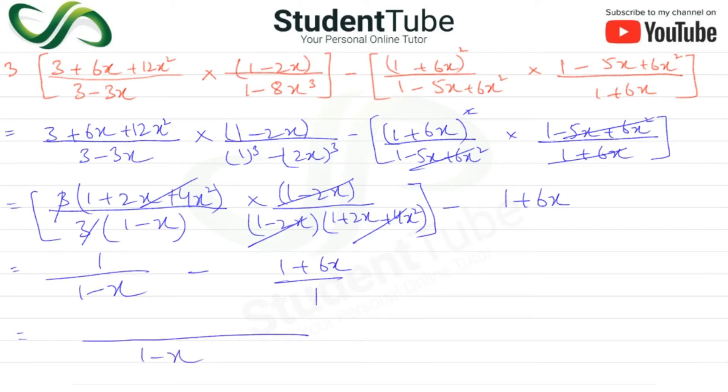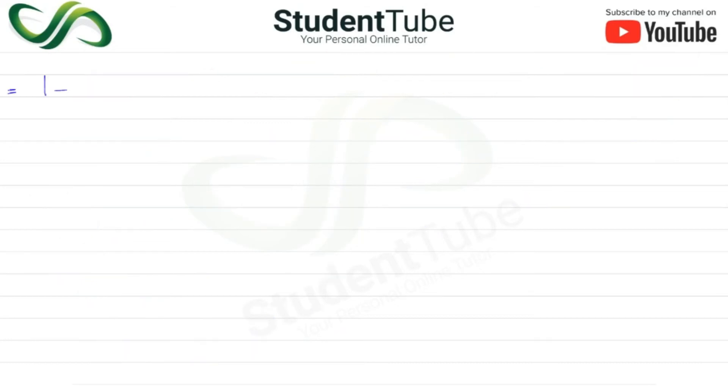So here we have 1, then minus, and 1 plus 6x. We multiply it with 1 minus x, so this will be 1 minus 1 minus x plus 6x minus 6x squared.